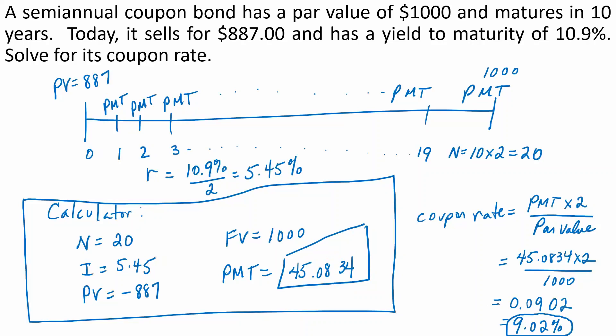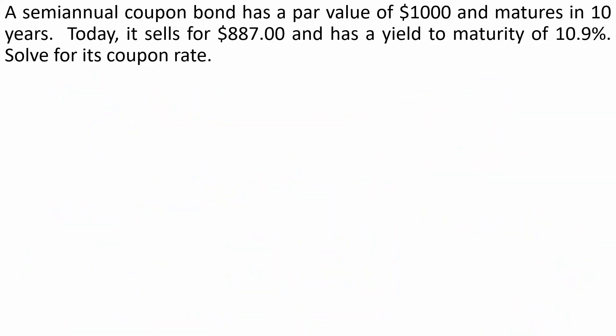We could also solve for the answer by using algebra. We know that $887 is the price, that is the present value of an annuity, and the par value is $1,000. We would then rearrange the formula to solve for PMT.